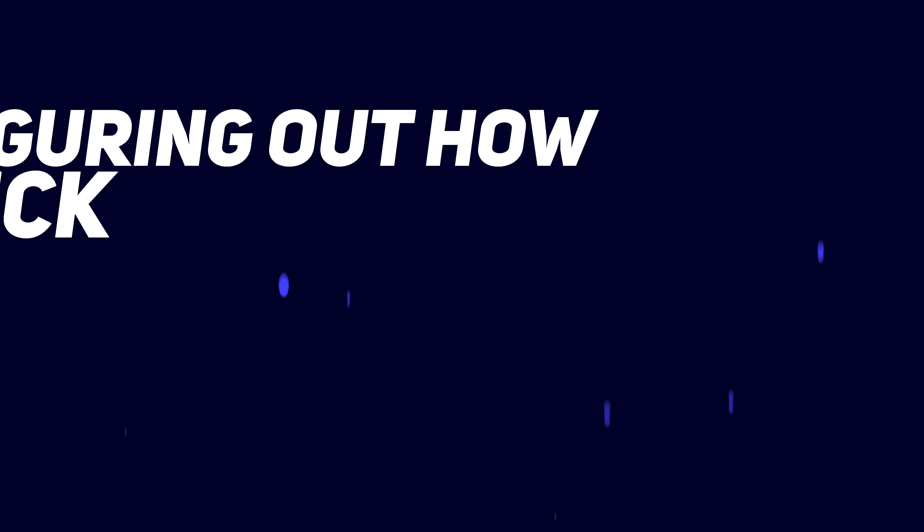Now we want to figure out how much you can afford to pay for each click on your ad without losing money. Let's assume your conversion rate is 5%, so if 100 people click on your ad, 5 of them will buy a mug. You sell 5 mugs and each mug gives you $10 profit, so 5 mugs times $10 equals $50 in profit. It took 100 clicks to get those 5 sales, so divide your profit by the number of clicks: $50 divided by 100 clicks equals $0.50 per click.